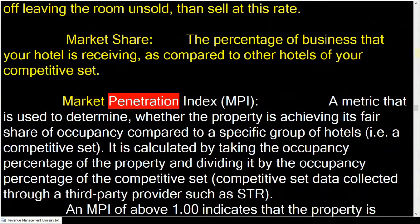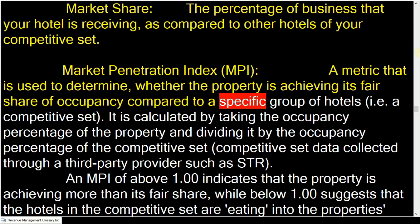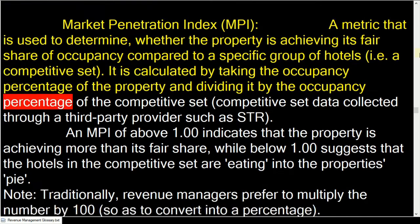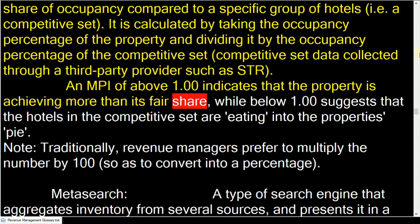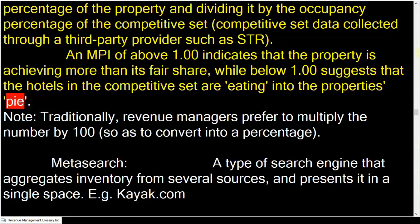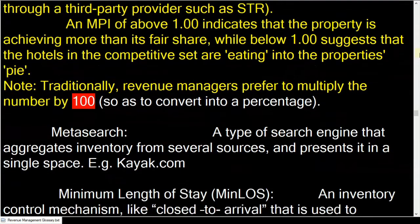Market penetration index (MPI): a metric used to determine whether the property is achieving its fair share of occupancy compared to a specific group of hotels. It is calculated by taking the occupancy percentage of the property and dividing it by the occupancy percentage of the competitive set. An MPI above 1.00 indicates more than fair share; below 1.00 suggests the competitive set is eating into the property's share. Traditionally, revenue managers prefer to multiply the number by 100.